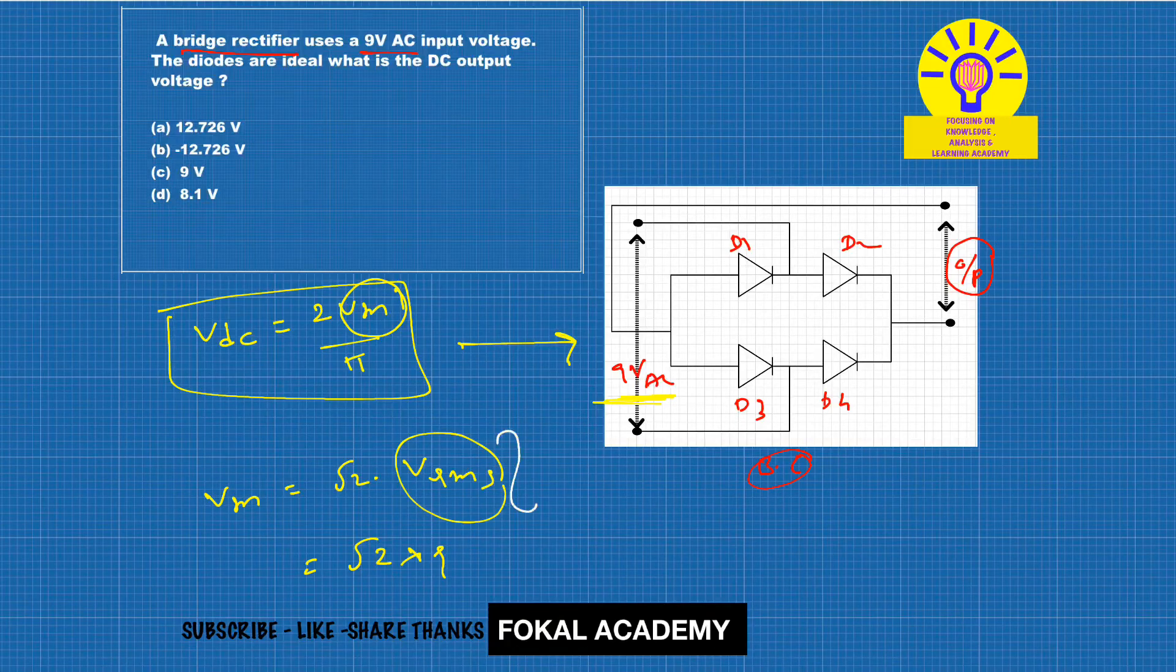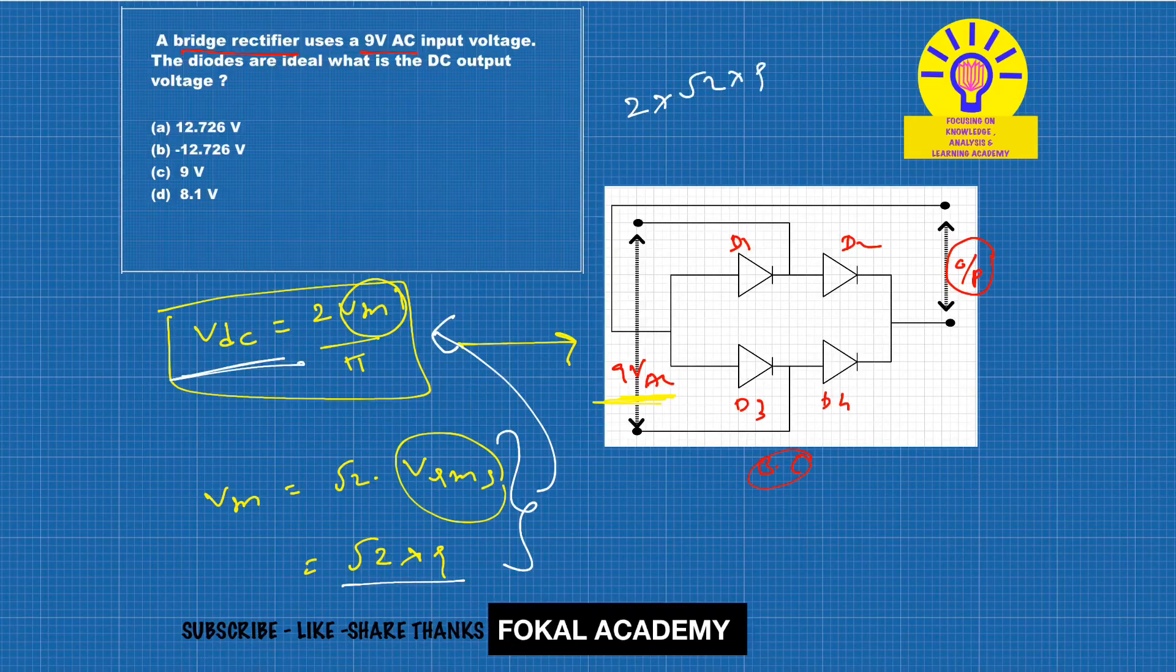Now substitute this Vm value in this equation. Then we get the output DC voltage, that is 2 into Vm, which is root 2 into 9, by pi. So that's equal to 8.1 volts. From the options, this is the correct option.